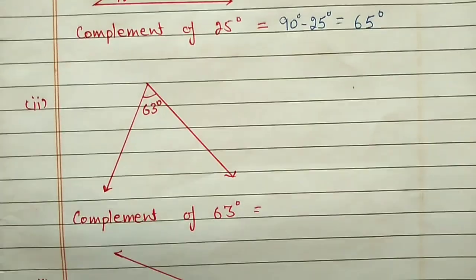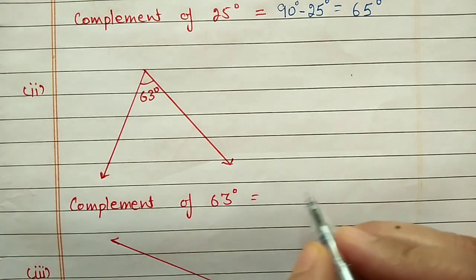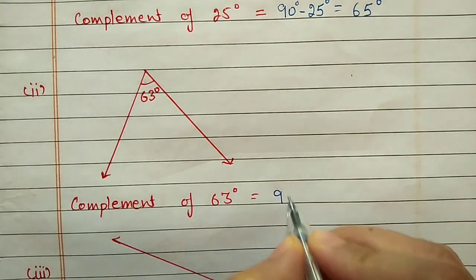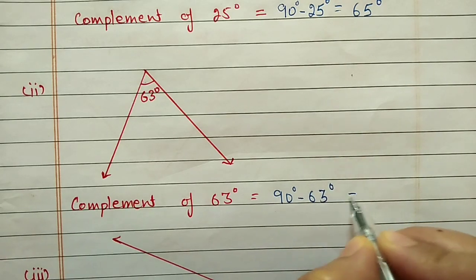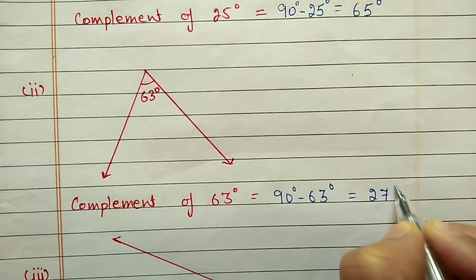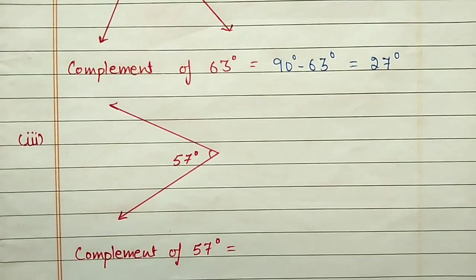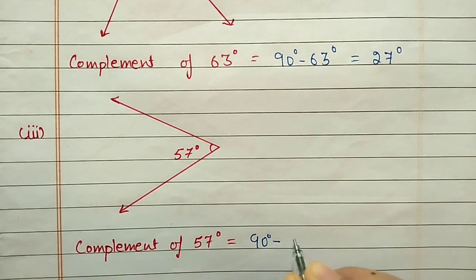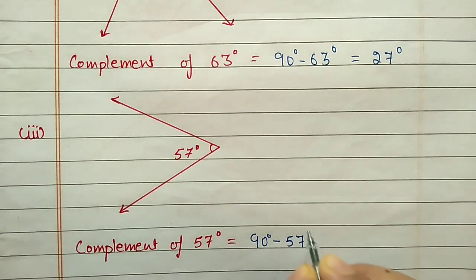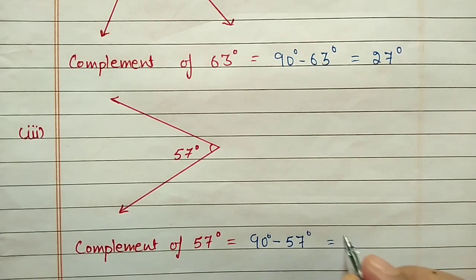Second angle is 63 degrees, so the complement of 63 will be 90 minus 63, equal to 27 degrees. Third angle is 57 degrees, so the complement of 57 will be 90 minus 57, which equals 33 degrees.